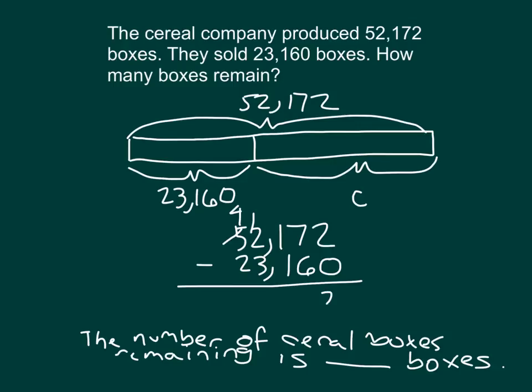Two minus zero is two. Seven minus six is one. One minus one is zero. Twelve minus three is, right, nine. And that's nine-thousands there. Four ten-thousands minus two ten-thousands is two ten-thousands. So C is equal to 29,012. And when I write it back down here, I am expressing my answer clearly.